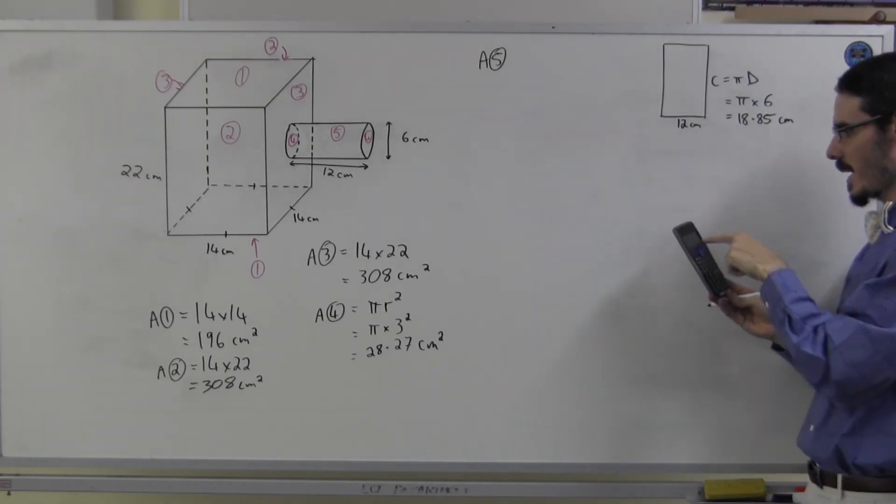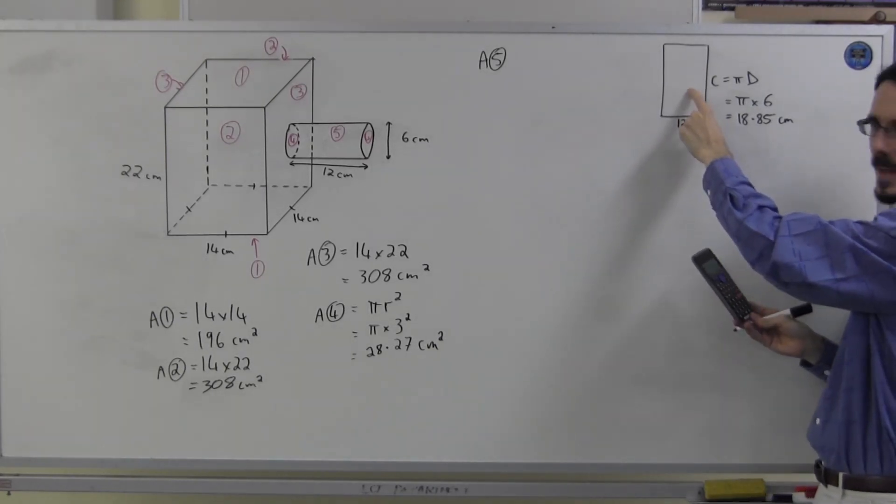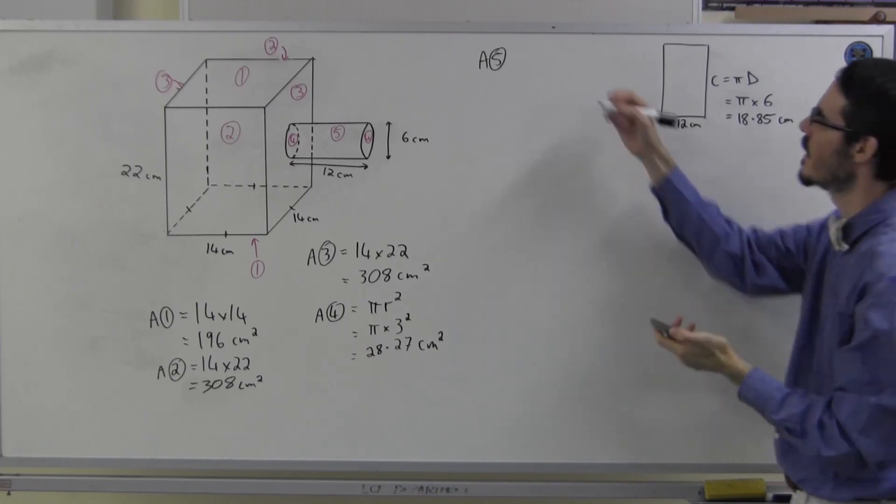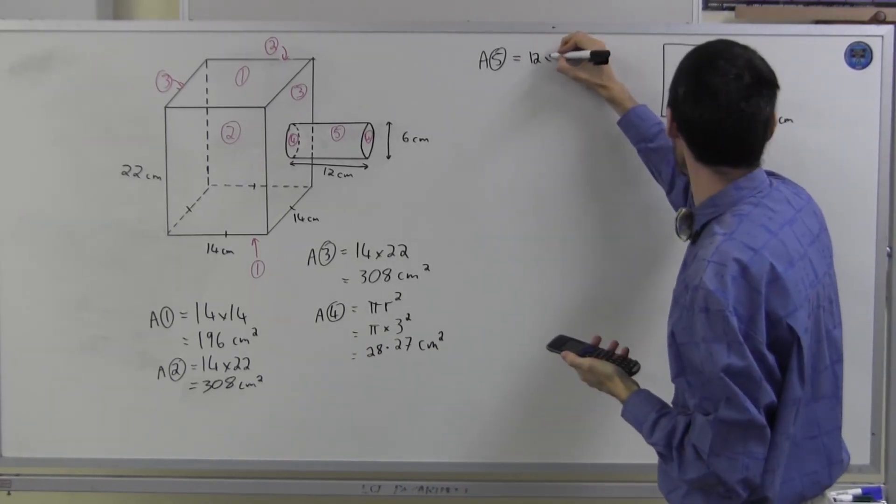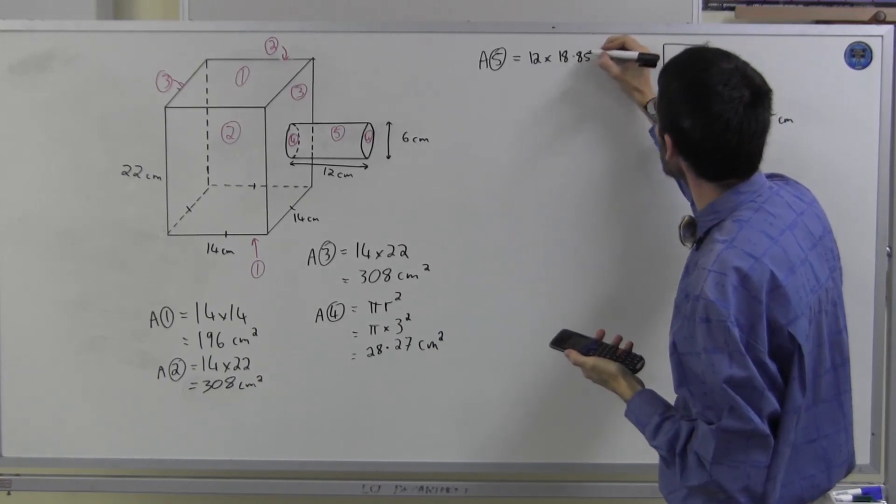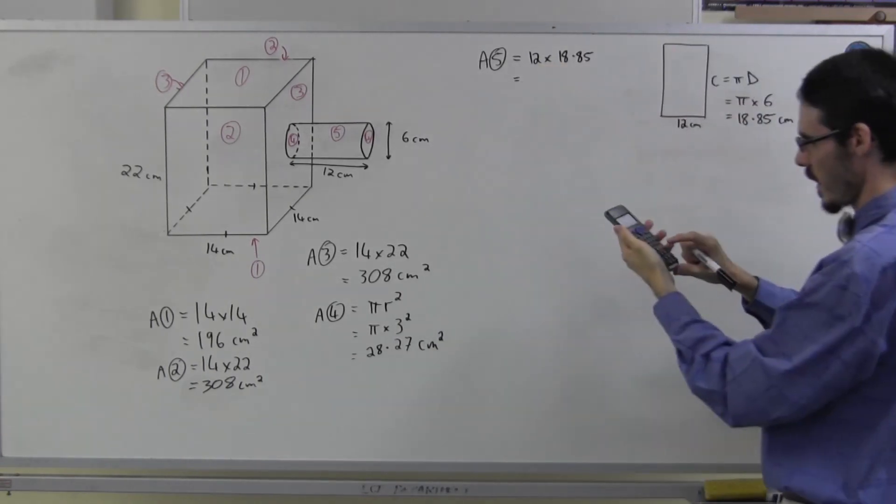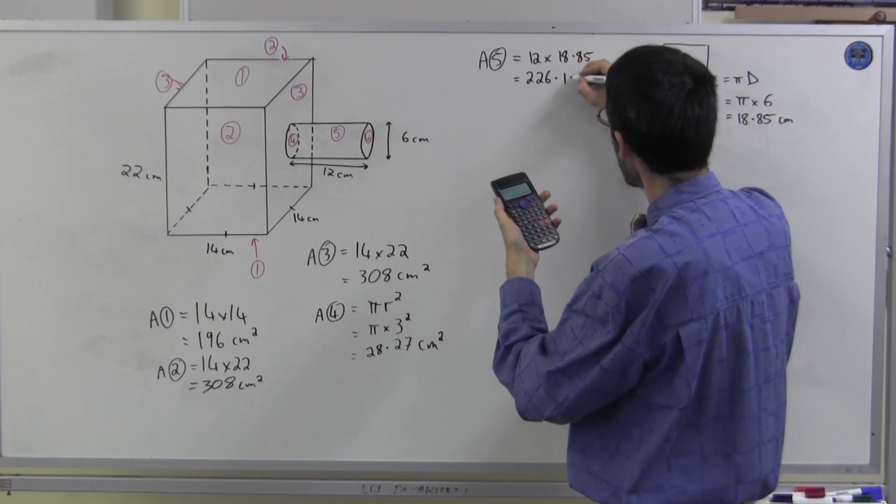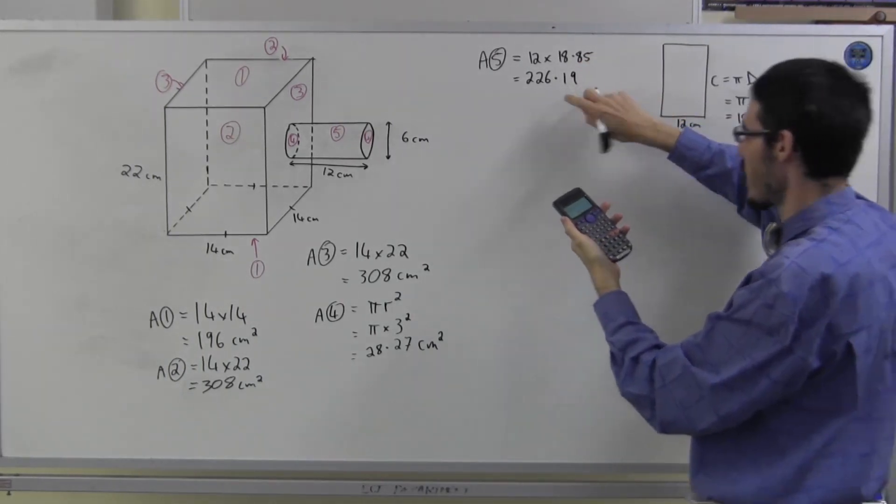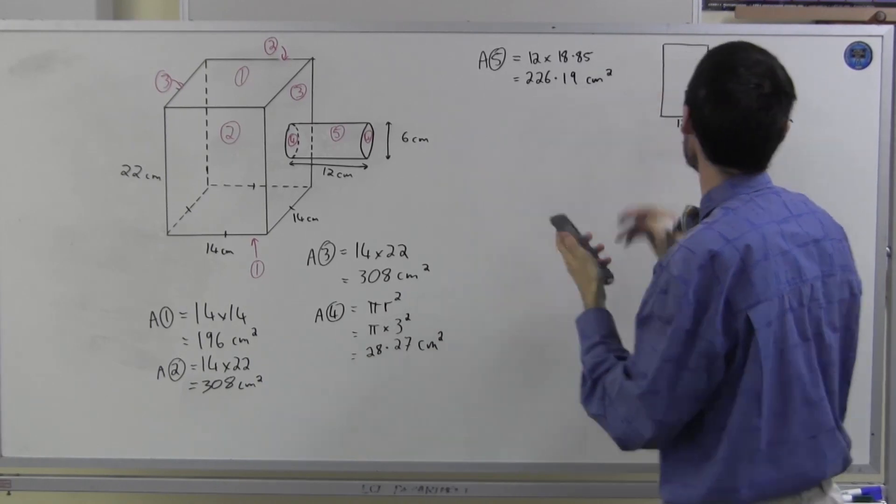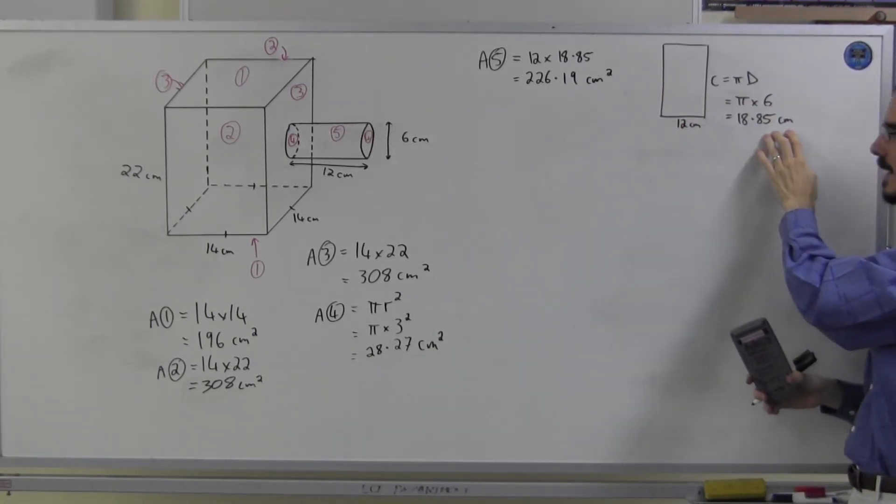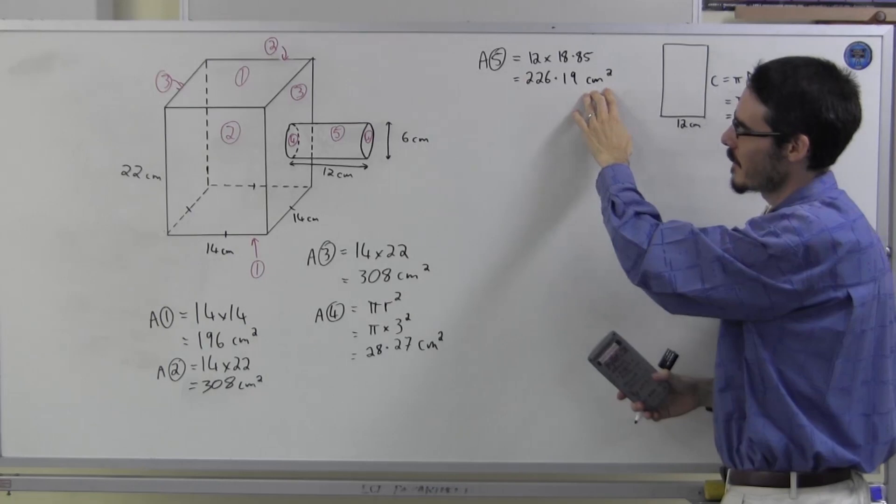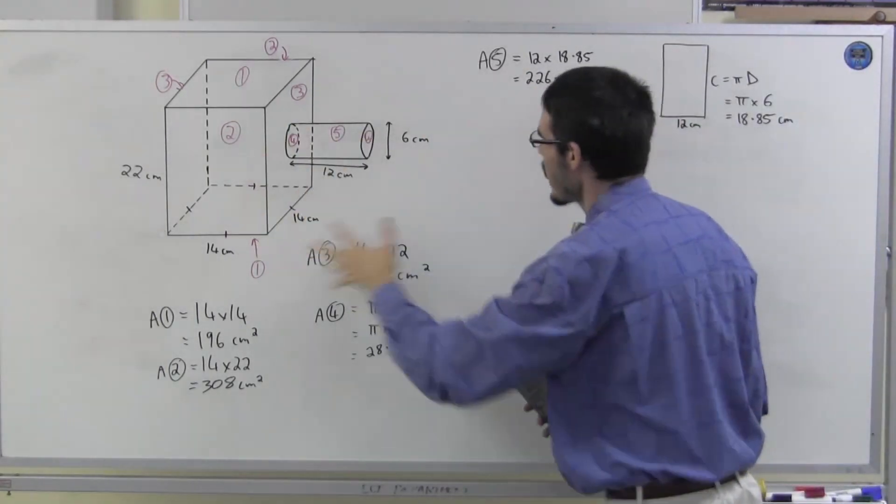But before I do anything else with that number in my calculator, I'm going to work out this area. So I don't clear this. I don't use the rounded off version. I use the original version still on my calculator. The area is going to be 12 times 18.85, which is, just go times 12 on the calculator, 226.19. It's 194, so I'm going to round down. Square centimetres. Be careful. Circumference is a length in centimetres, but area is in square centimetres. I've now calculated all of those areas.